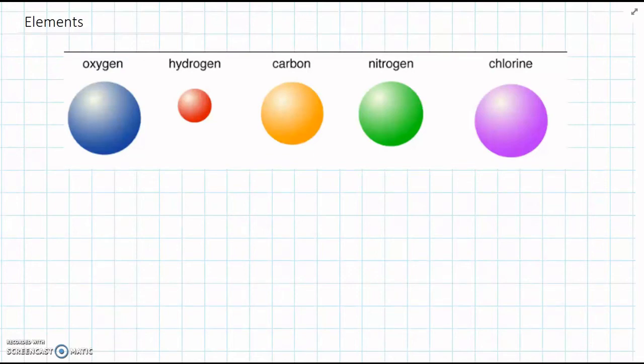Previously we've learned about atoms and how atoms can join together to make molecules. Now we're going to look at the fact that there are lots of different types of atoms. We can see in our picture here we've got five different atoms.